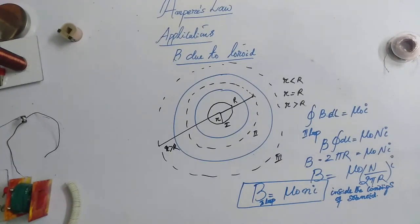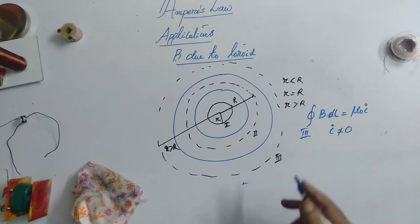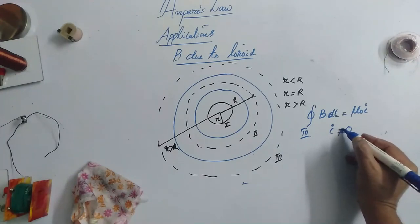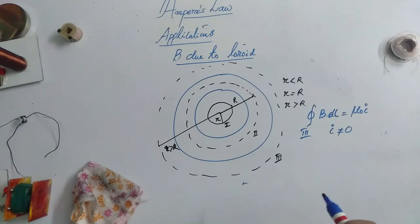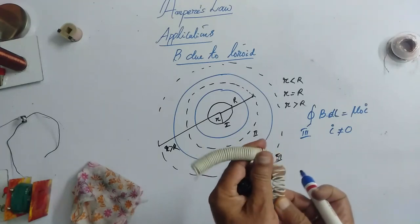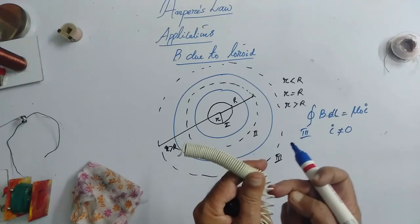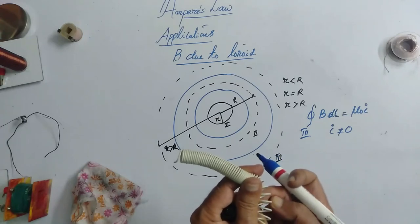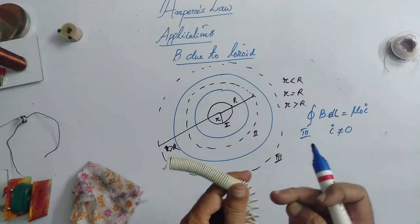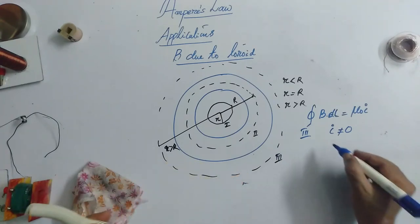Now, if you take the third one, again, we have here, i is not equal to 0. Because this entire loop is also having the i, this current which is passing in this toroidal solenoid. So, i is not equal to 0. But, what about the observer observes? Suppose this is the extended portion of this solenoid. If somebody stands here and if he observes that the current is coming out and then again it is going in, again it is coming out, then again going in. So, the net current that he observes is 0.